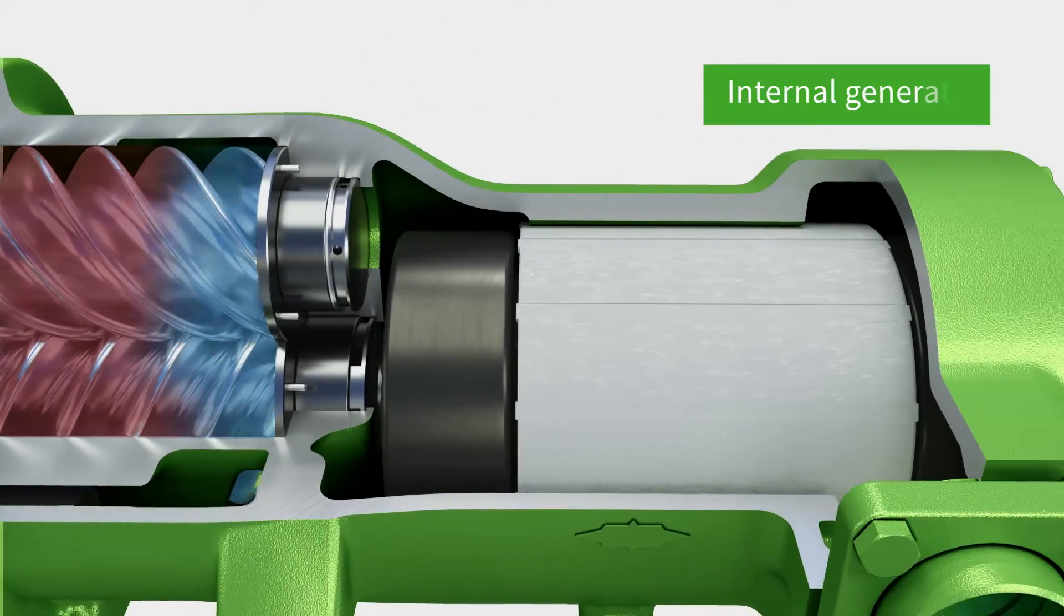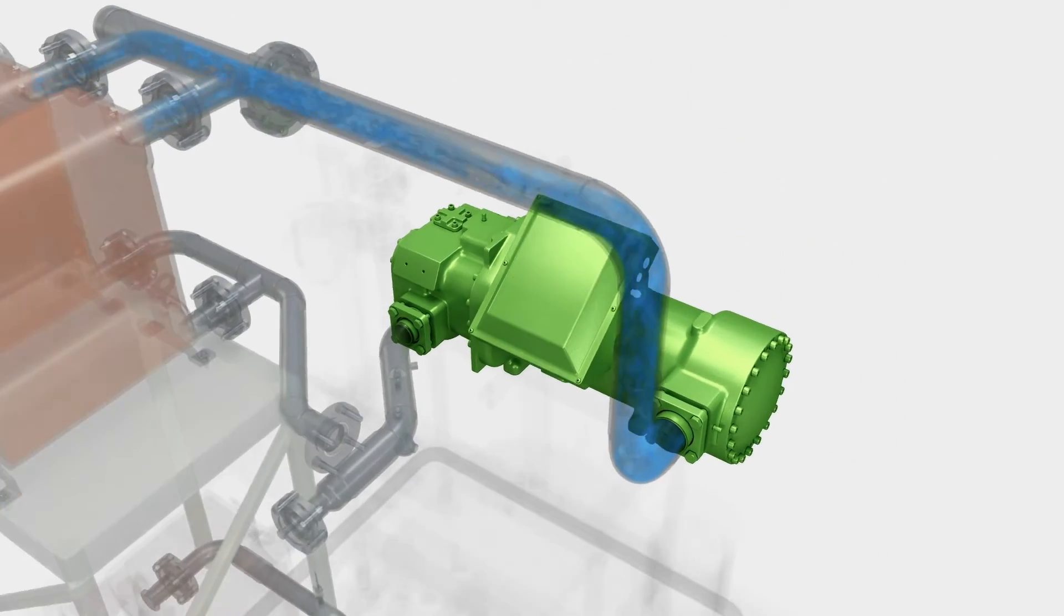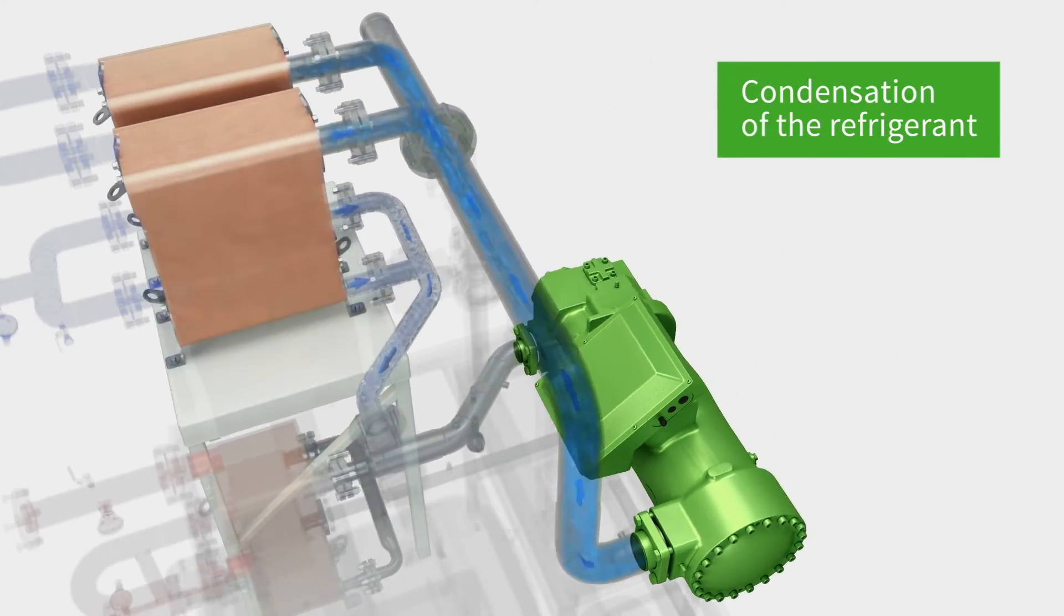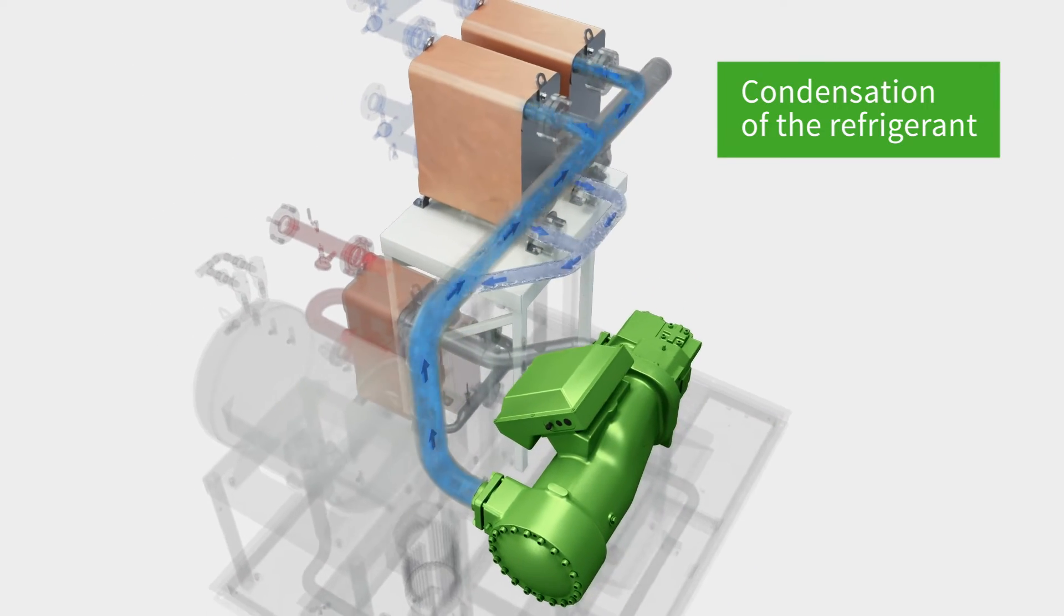The expander now drives the generator. Both are together in the same housing. The gaseous refrigerant is then condensed and added back into the cycle as a liquid by the pump.